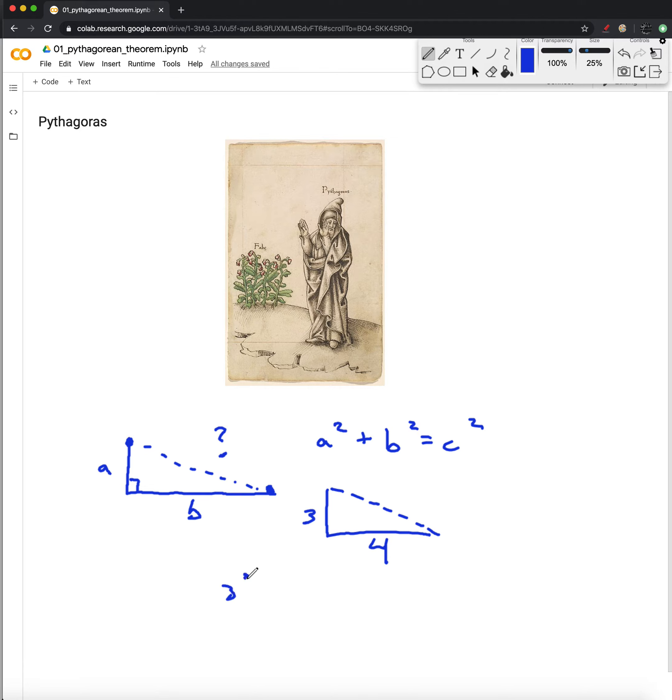We have 3 squared plus 4 squared. That's 9 plus 16 is 25. And we know that 5 squared is 25, so this side is 5 units long.